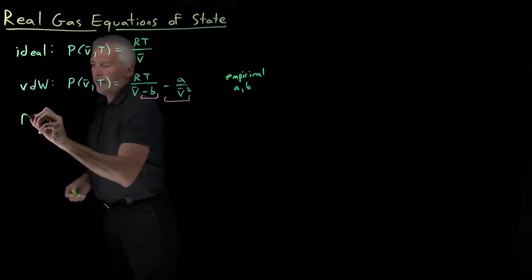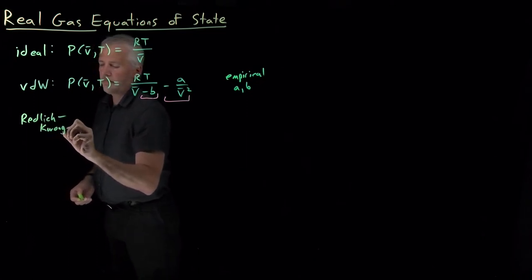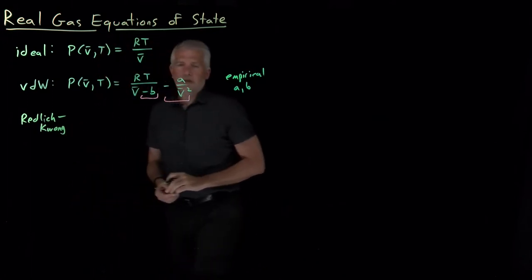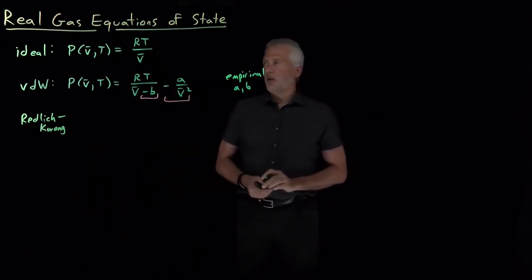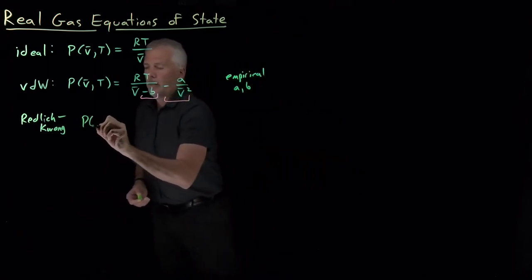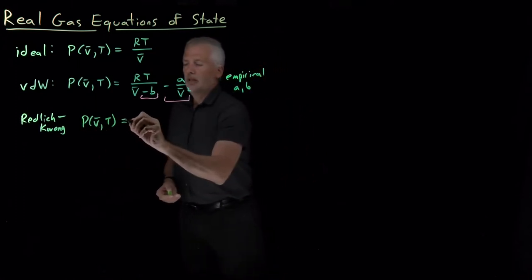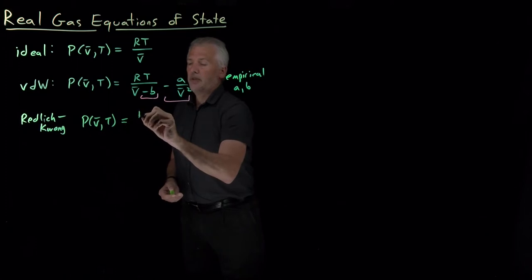So we can describe a few of these just to get a taste for what they're like. The first of these we can discuss is something called the Redlich-Kwong equation of state. All of these equations of state have the form of being able to predict the pressure based on the molar volume and the temperature.